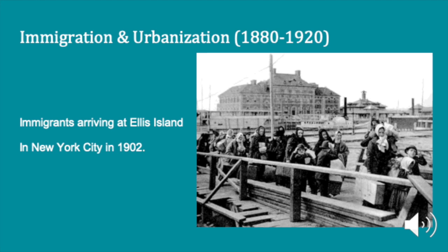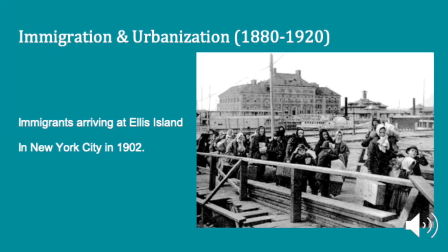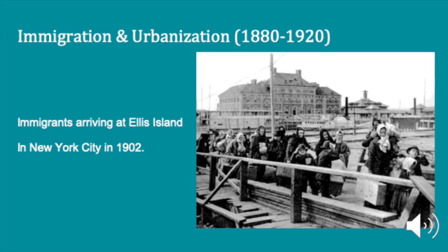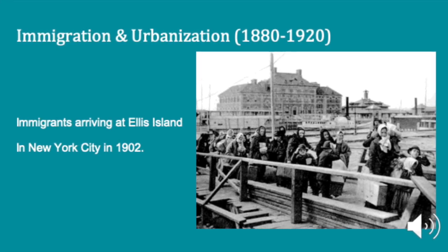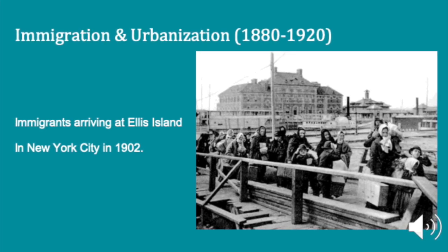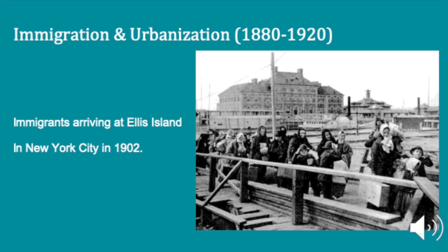So immigration and urbanization. Immigration patterns to the United States changed significantly in the late 19th century. Until the 1880s, a majority of immigrants to the United States came from Northern and Western Europe and were Protestant Christians, with a slight exception with a large influx of Irish Catholic immigrants in the 1840s and 50s.